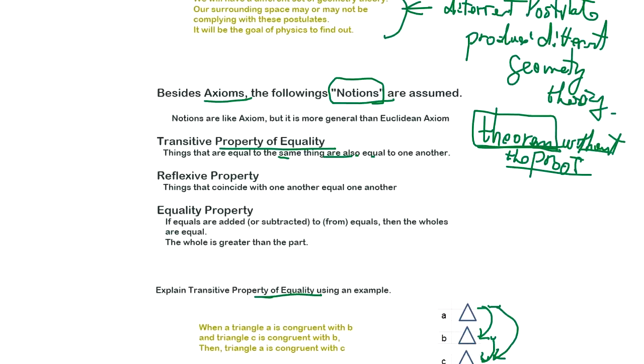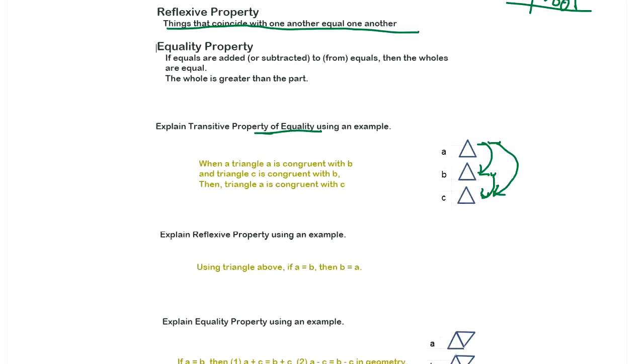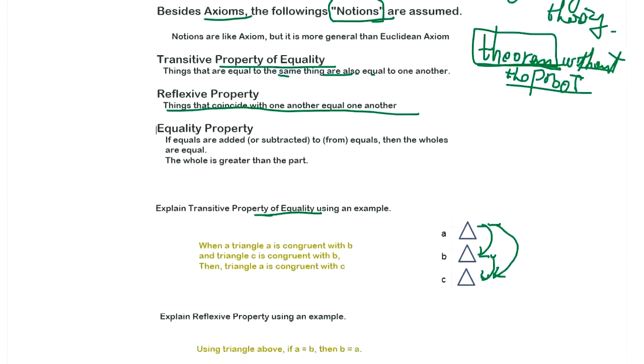Next one is a reflexive property. Things that coincide with one another equals one another. So let's look at it. Using triangle verb, if A is B, then B is A. That means if A is congruent to B, you can say B is also congruent to A. It's very common sense, but that's a notion.